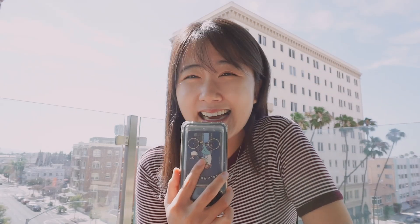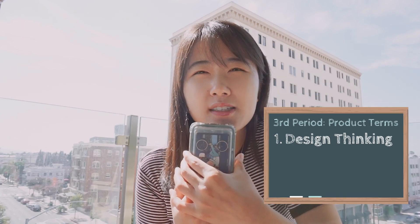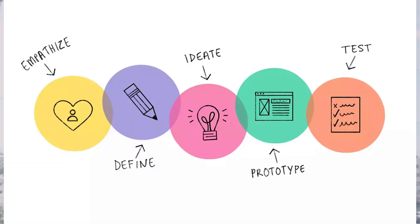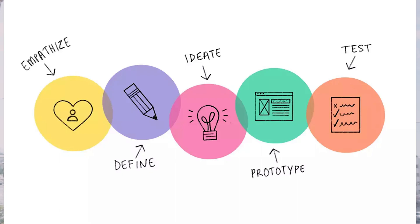Period number three is broader product terminologies. Design thinking is an iterative and non-linear process which contains five different phases. First is to empathize with your users. Second is to define the problem spaces. Third is to ideate and brainstorm on ideas and solutions. Fourth is prototyping and making mock versions of that idea. And fifth is to test and validate if that prototype or idea makes sense.